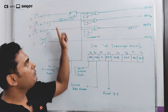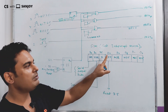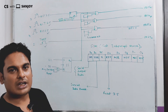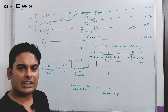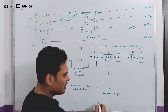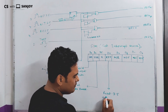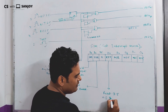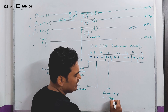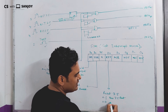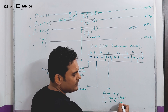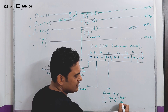When this bit is 1, RST 7.5 is reset. And if this bit is 0, then RST 7.5 is not reset.